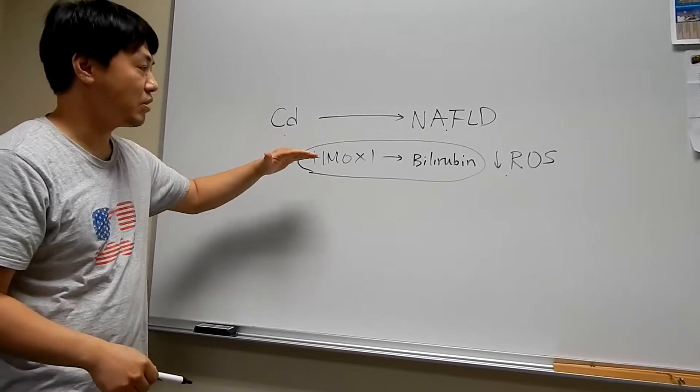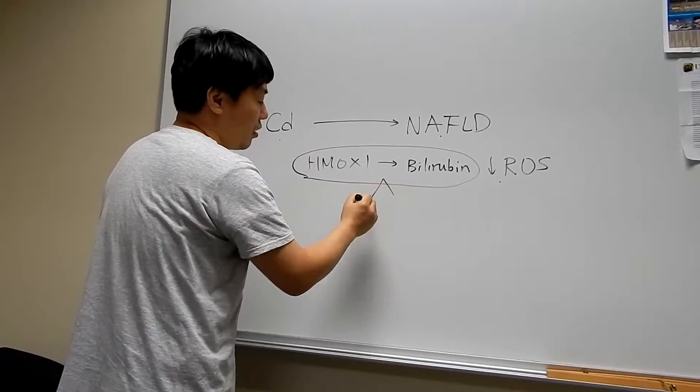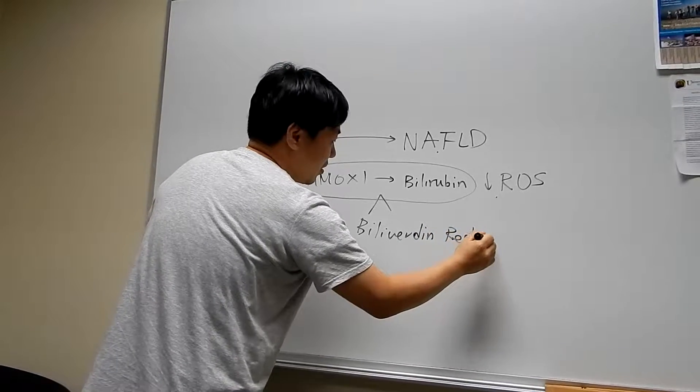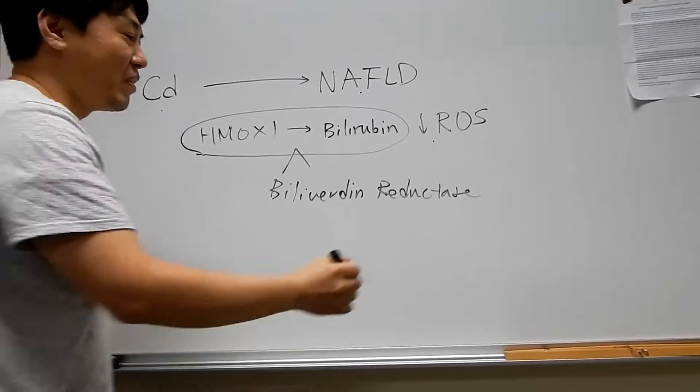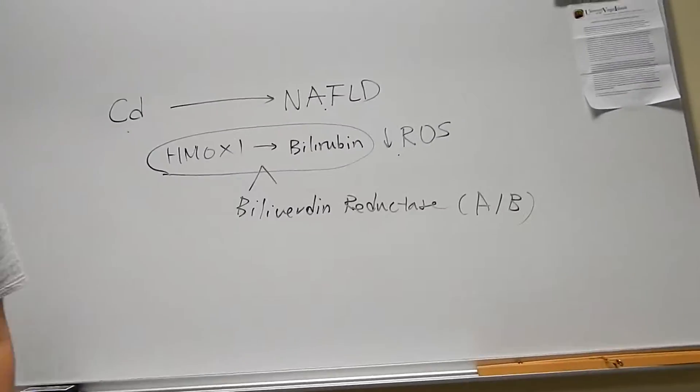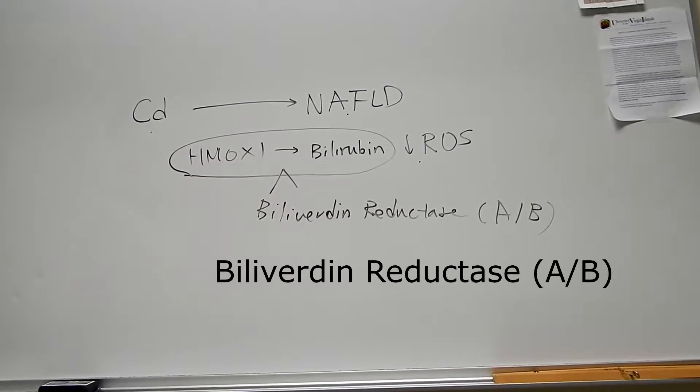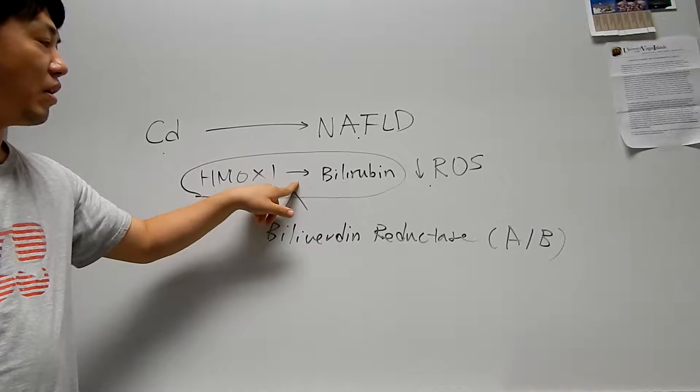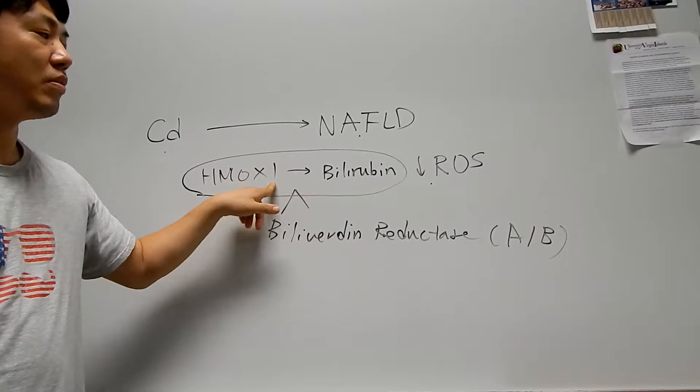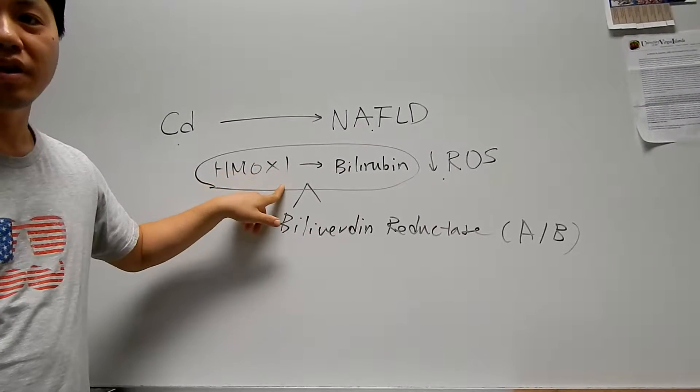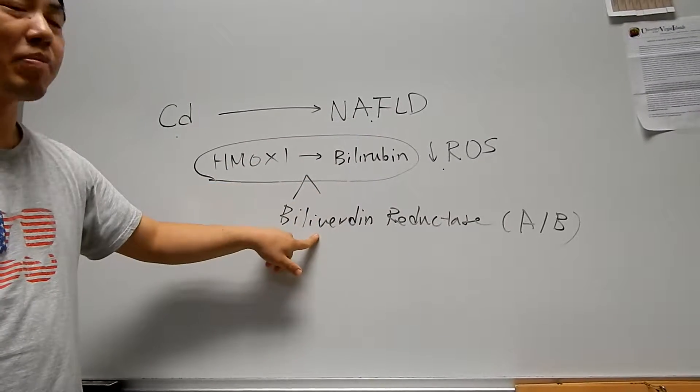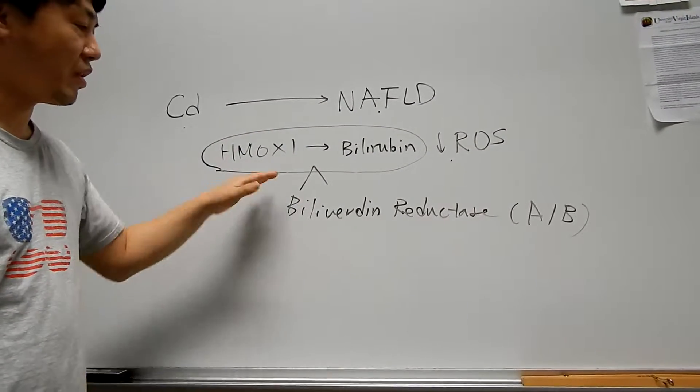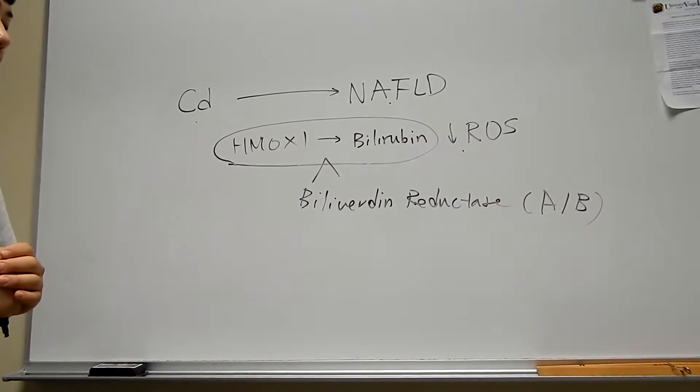What we're interested in here is the hemoxygenase, and also there's another gene called bilirubin reductase. There's reductase A and B. What these enzymes or genes do in the process of this conversion, these enzymes participate in this process to make bilirubin to bilirubin. Hemoxygenase helps to make bilirubin, but we want to have bilirubin, so this enzyme participates in that process to make bilirubin.